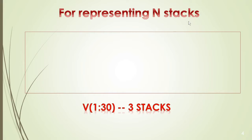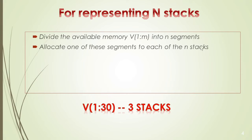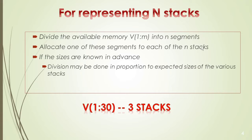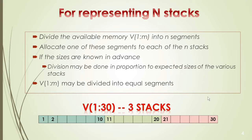Suppose we want to represent N stacks. The memory is divided into N segments, and we allocate one segment to one stack. If we know the size of each stack, we can divide the memory. For example, with 30 memory locations and 3 stacks: locations 1–10 for the 1st stack, 11–20 for the 2nd stack, and 21–30 for the 3rd stack.